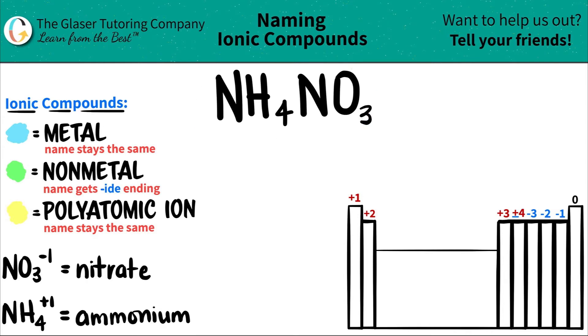In this case, we have three different elements: N for nitrogen, H for hydrogen, and O for oxygen. So it's always easiest to find out your polyatomic ions and then work from there.